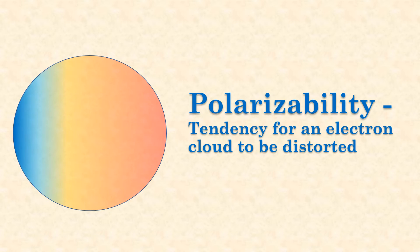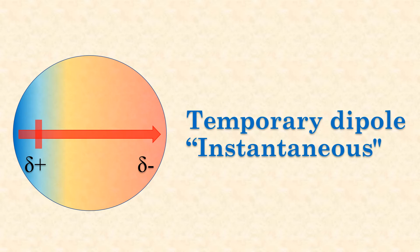This is called polarizability — the tendency for an electron cloud to be distorted. This creates a temporary, or instantaneous, dipole.